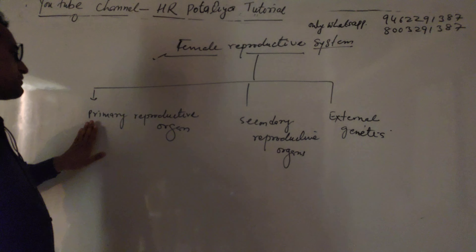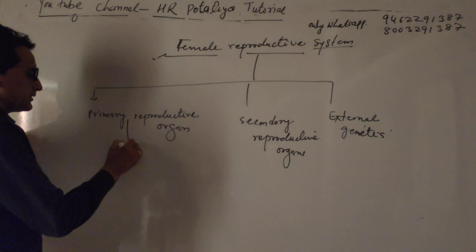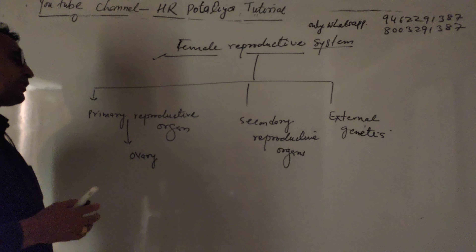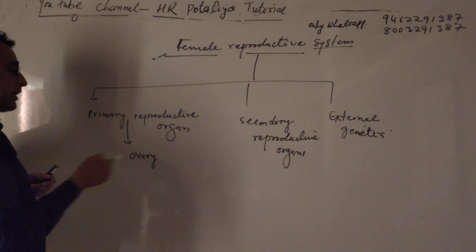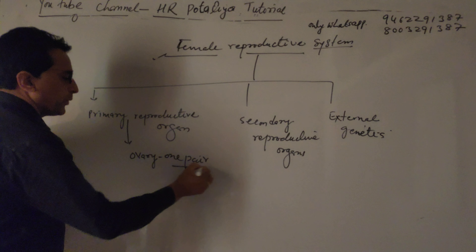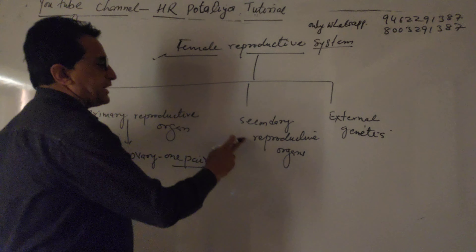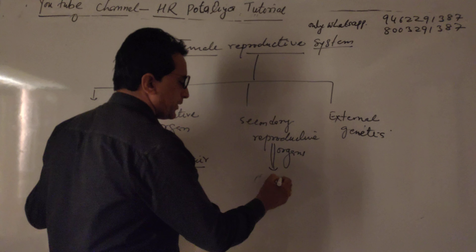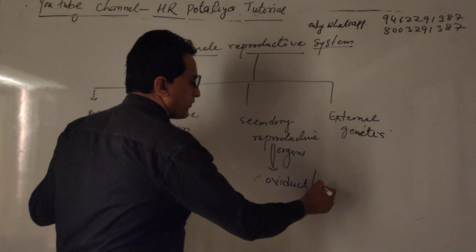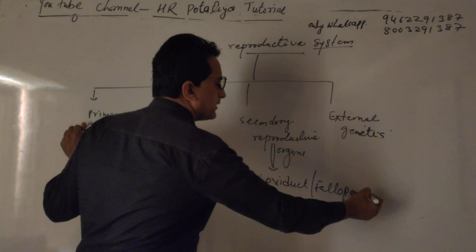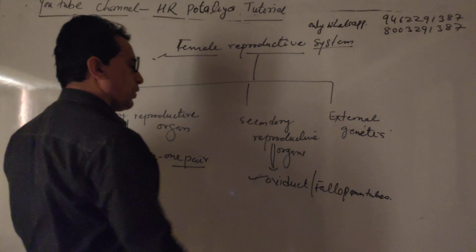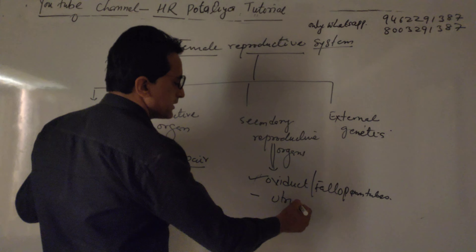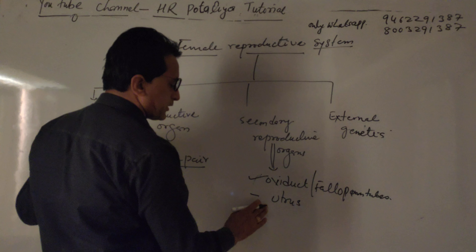The female reproductive system is classified into three parts. First, the primary reproductive organ, which is the ovary — one pair of ovaries determined from the embryological condition. Second, the secondary reproductive organs, which include the oviduct or fallopian tubes. The fallopian tubes open into the uterus, and the uterus opens into the vagina.